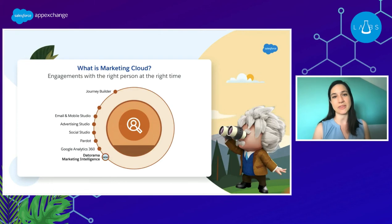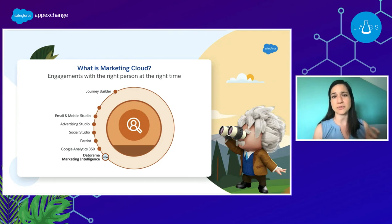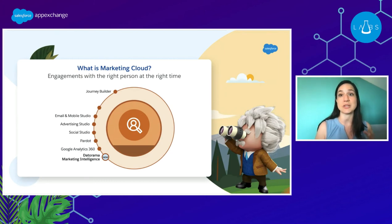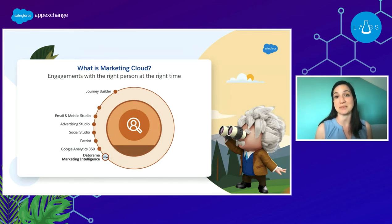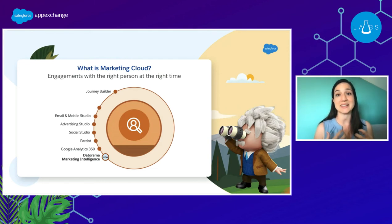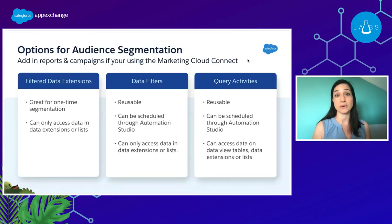Whether it's a data warehouse, Salesforce CRM core platform, or even another data source, the power behind Marketing Cloud is that it has all of this rich data coming in from all different places. We have things like Journey Builder, email and mobile studio, advertising studio for paid advertising, social studio to manage social media posts, Pardot, Google Analytics 360, and Datarama with marketing intelligence. The common theme behind all of these is data, and we're going to use that data for audience segmentation.